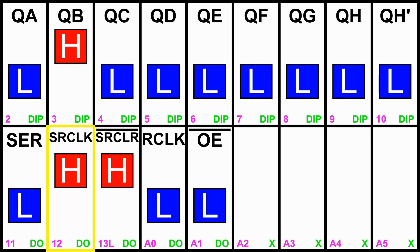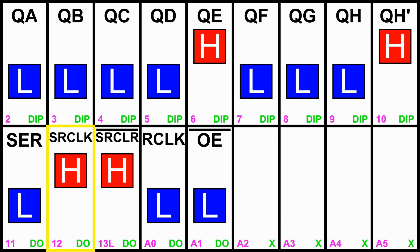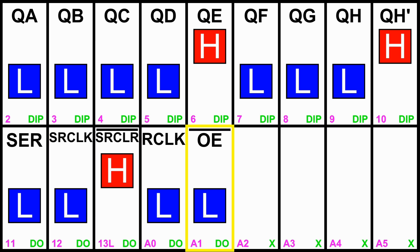So if I shift in one, two, three more lows, update it again, see it moves over three. And if I keep pulsing it, but I don't update the output, one, two, three, and now you see QH went high because internally that high was shifted over to QH, but it's not on the output yet. The output is still holding the old value.